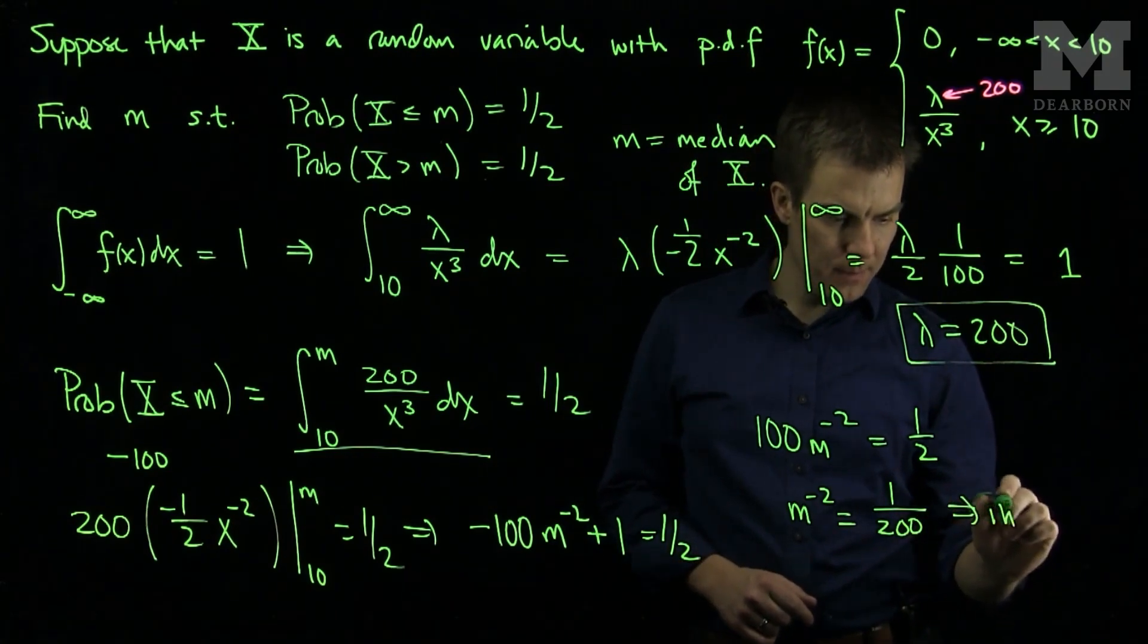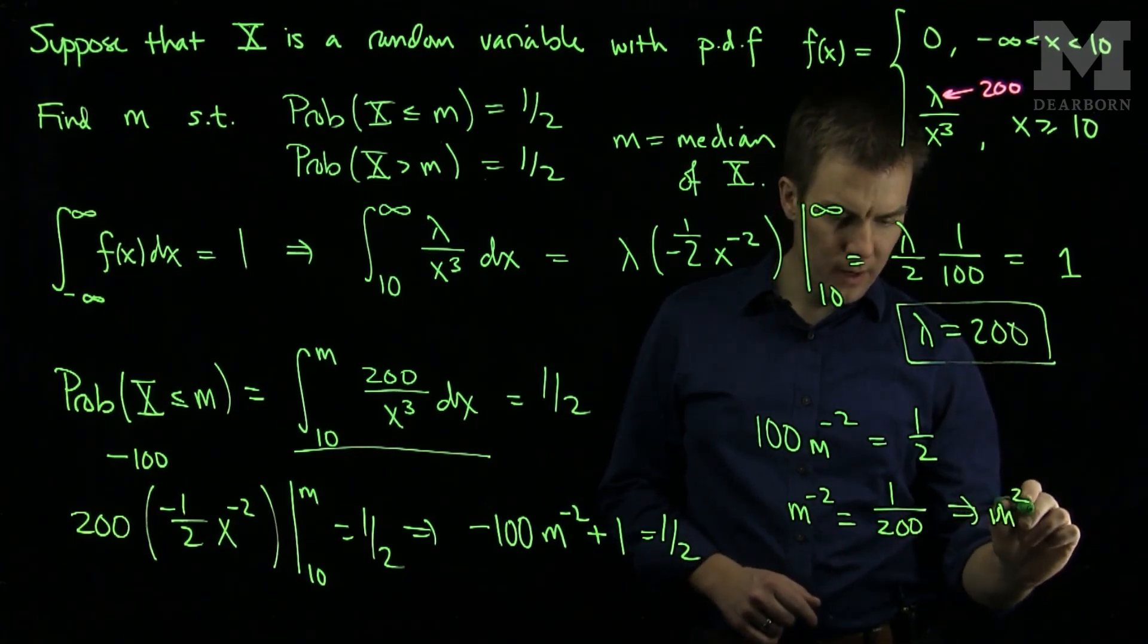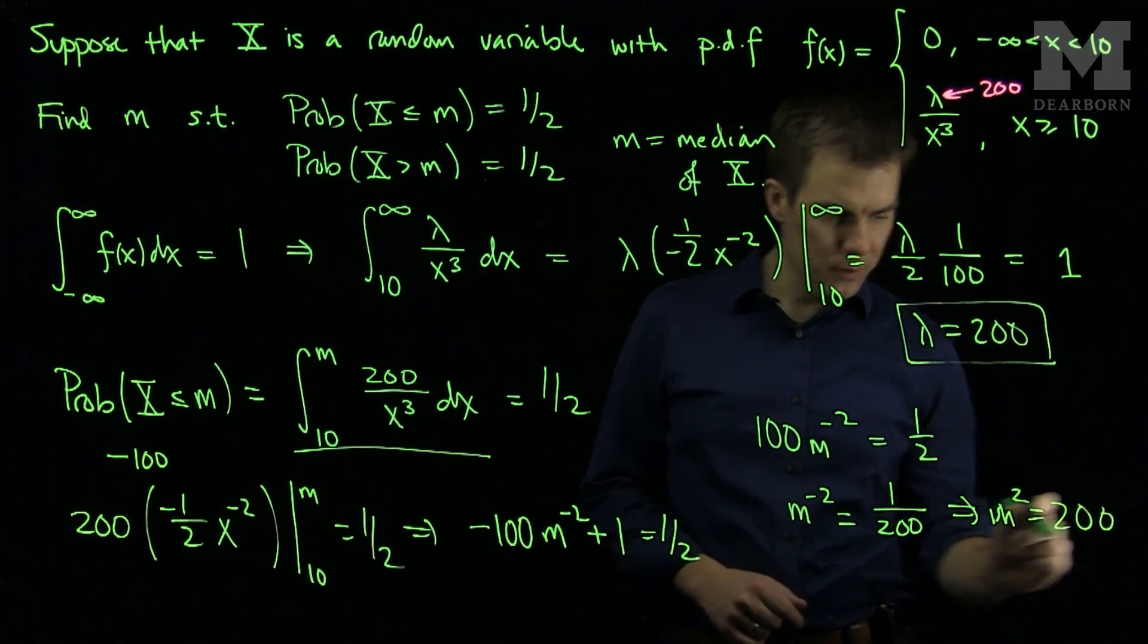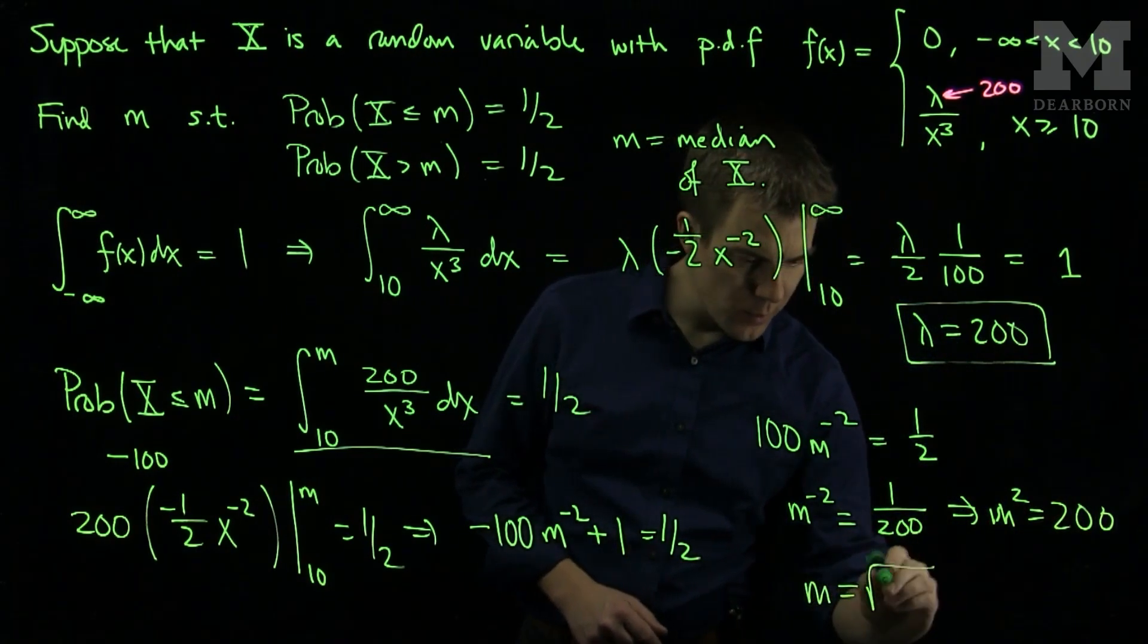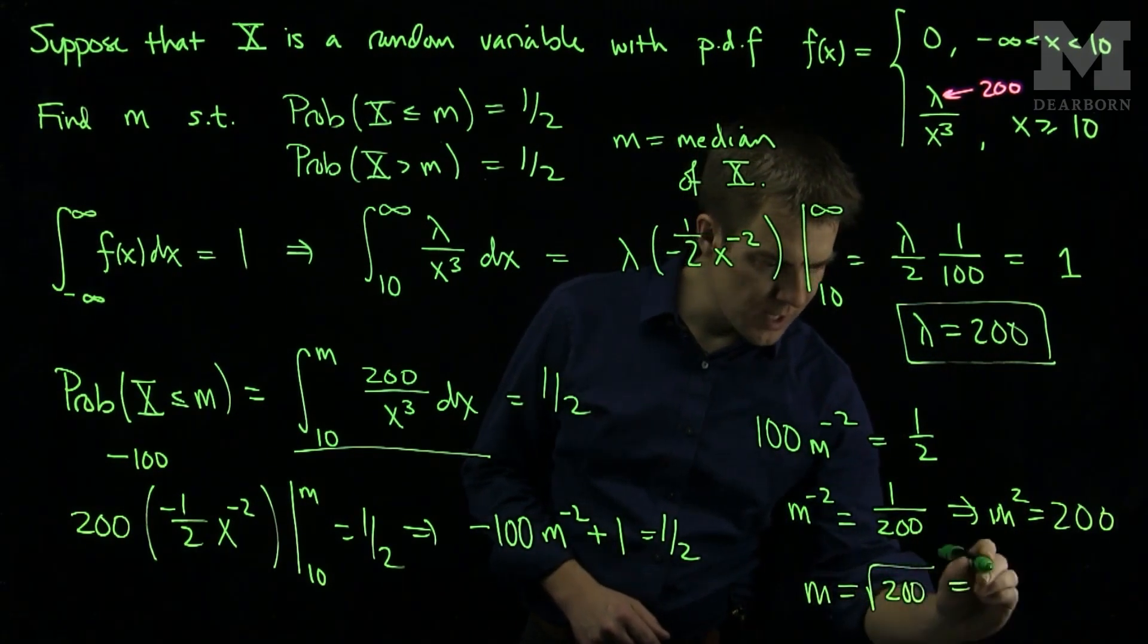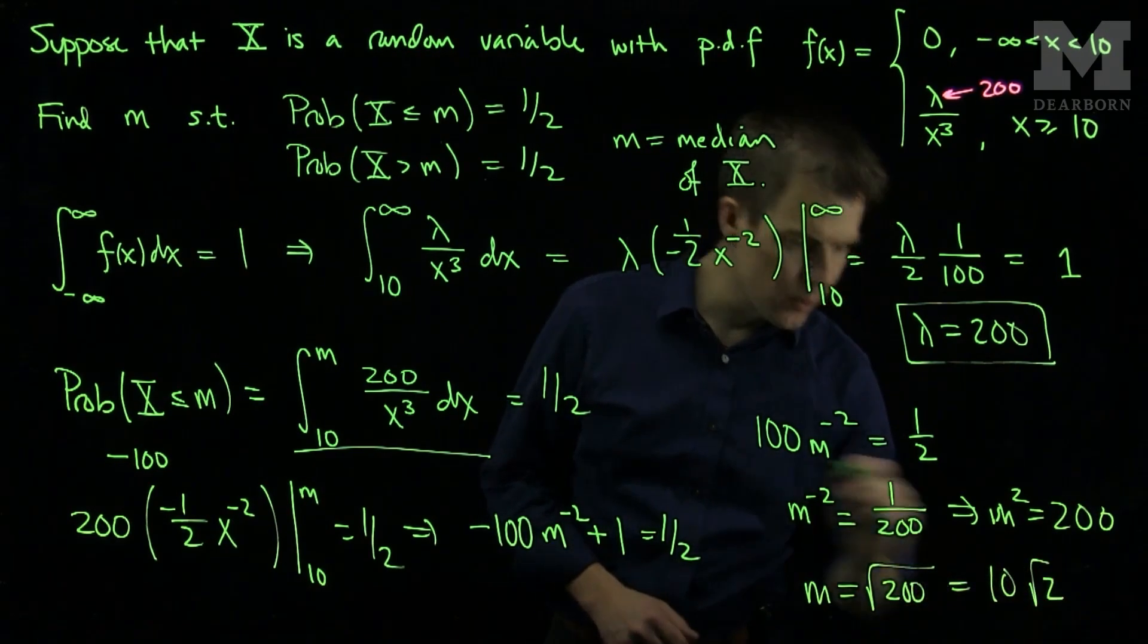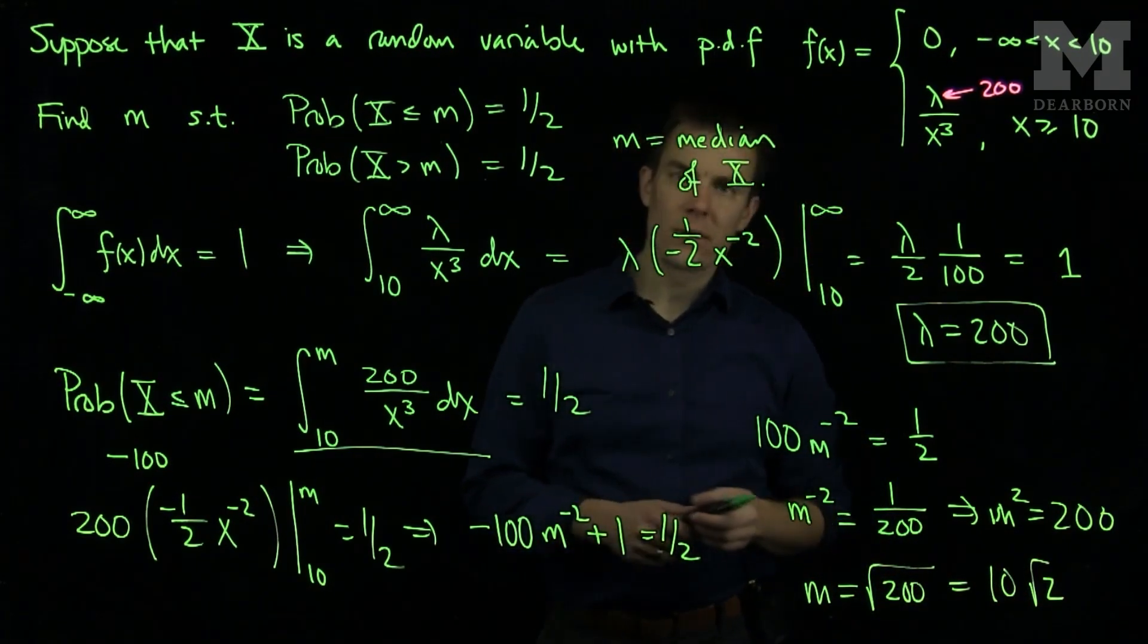So if m is equal to the square root of 200, which is the same as 10 square root 2, this will be the median value of the random variable x.